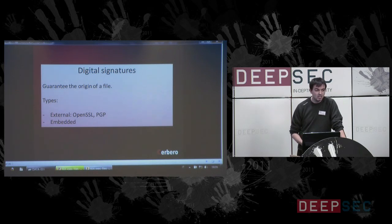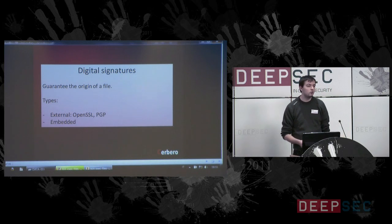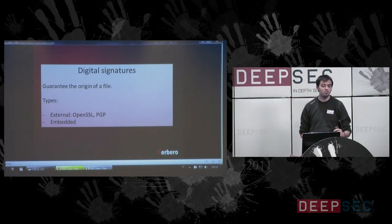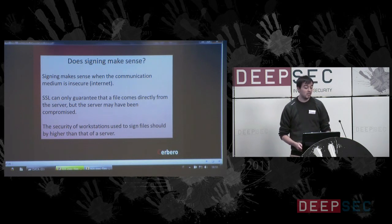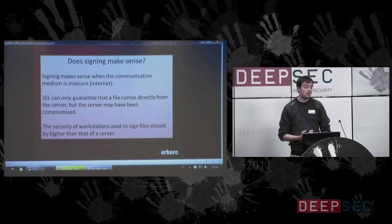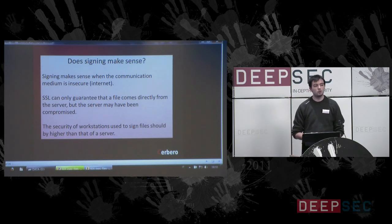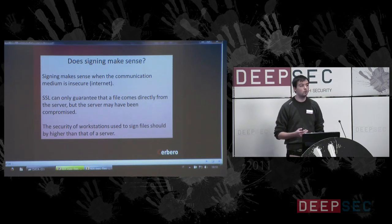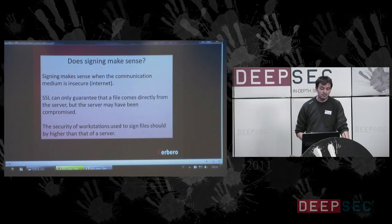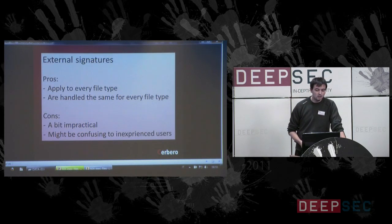Digital signatures guarantee the origin of a file. There are two types: external, like when we use OpenSSL or PGP, or embedded. Does signing make sense? Yes, it makes sense when the communication medium is insecure, like the Internet. SSL can only guarantee that the file comes directly from a server, but it tells us nothing about the security of the server itself, which may have already been compromised. It is reasonable to believe that the security of the workstations used to sign a file are higher than that of a server.